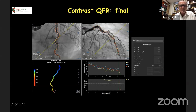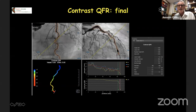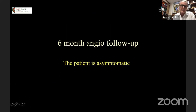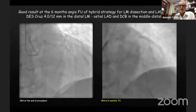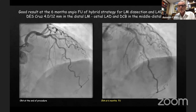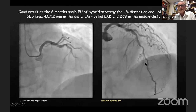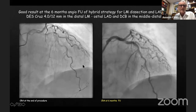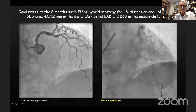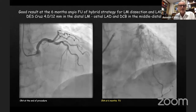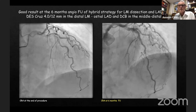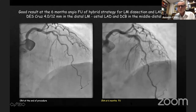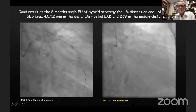Except for the very distal LAD, everything else is negative. You may remember the former contrast QFR, which was all red. Based on this physiological assessment, we did not place any stent and the patient was left as is. At 9 months, I show you the angiographic follow-up. There is still a non-healed dissection in the mid-LAD, but the result is very nice. The lumen is maintained, the bifurcation is excellent, the diagonal is not pinched — it's a very comfortable long-term result.